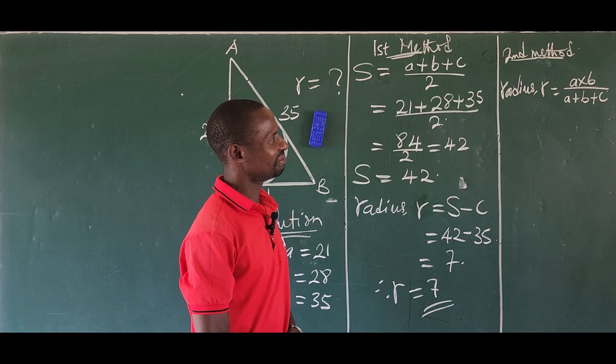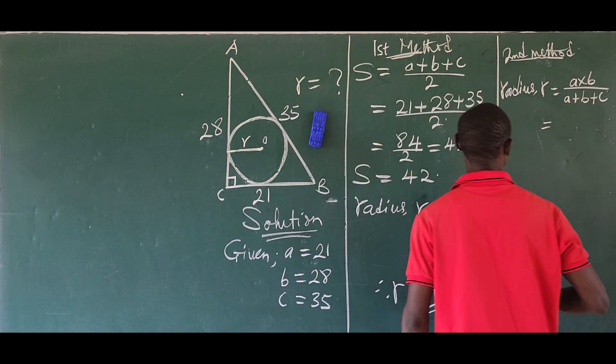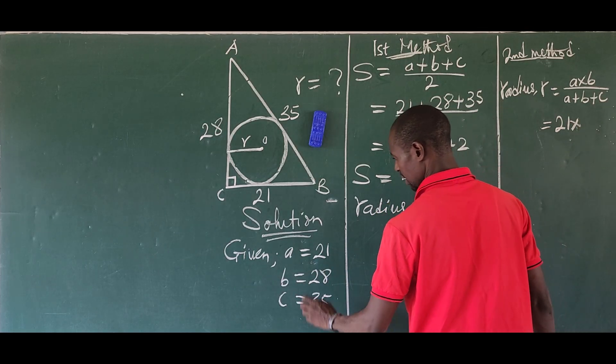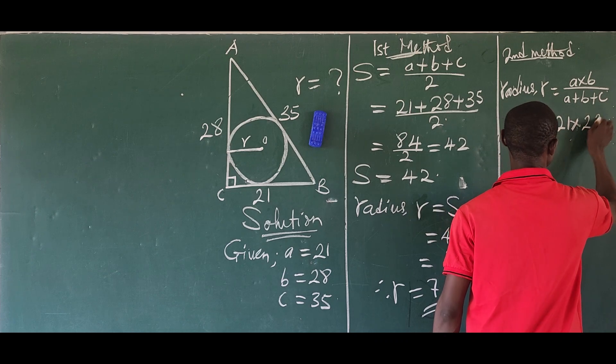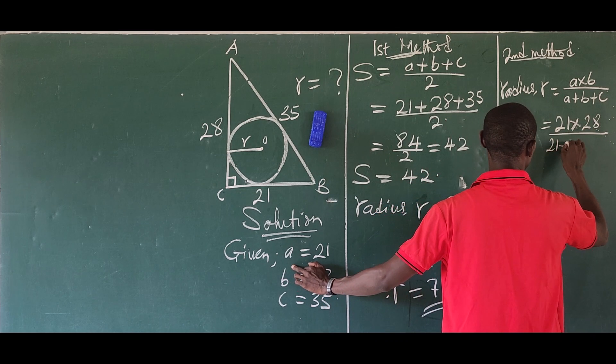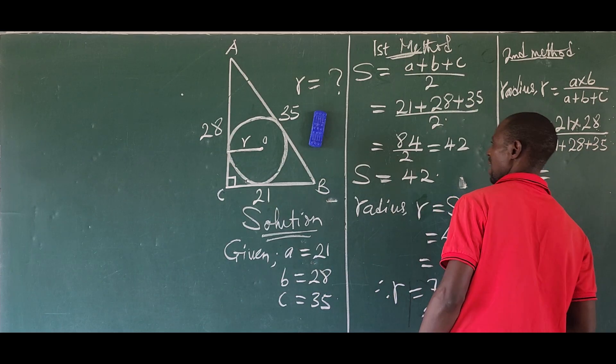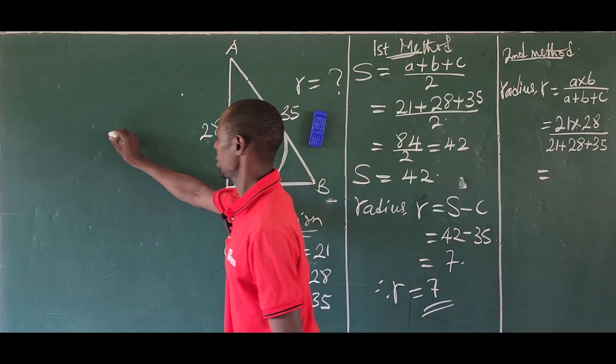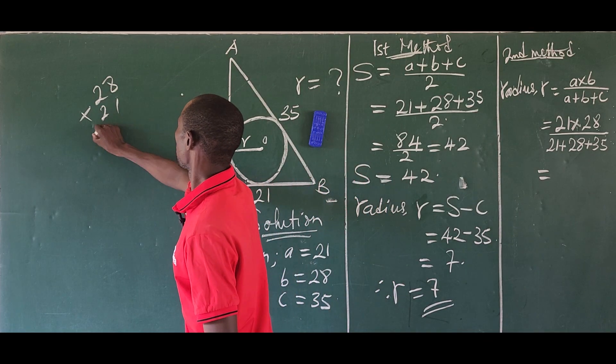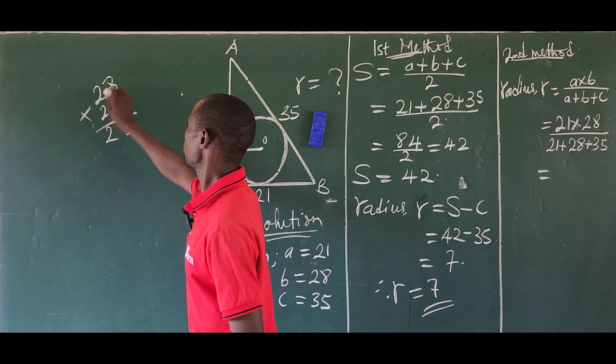Let's go ahead and multiply. What is our a? Our a is 21 times b, which is 28, all over a + b + c, which is 21 + 28 + 35. Let's multiply 28 times 21.